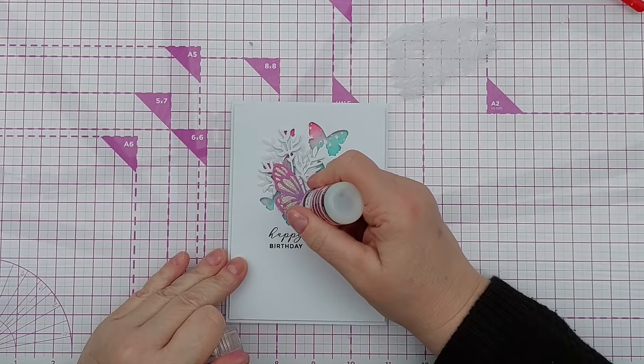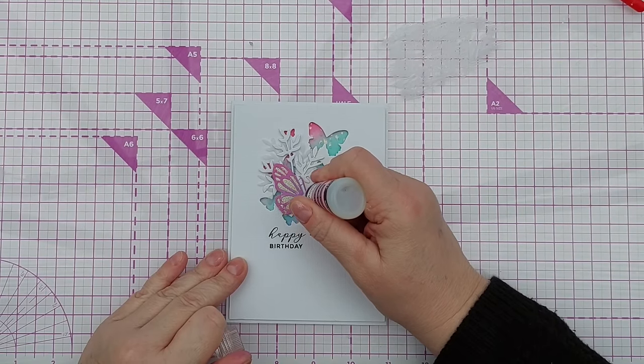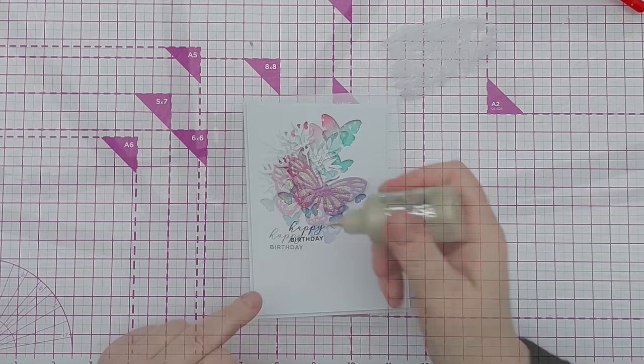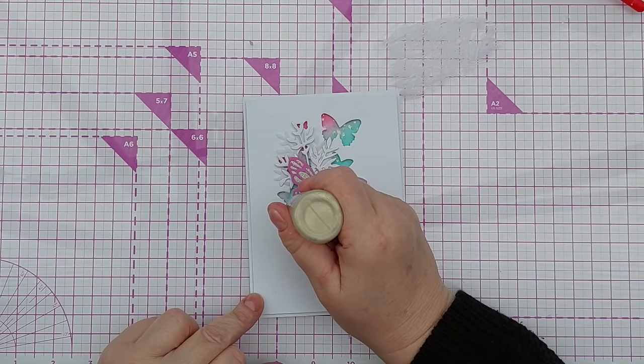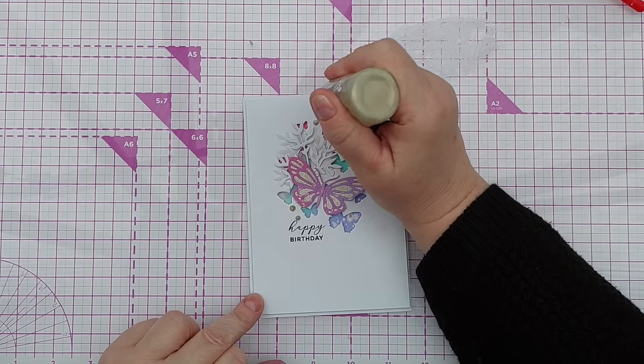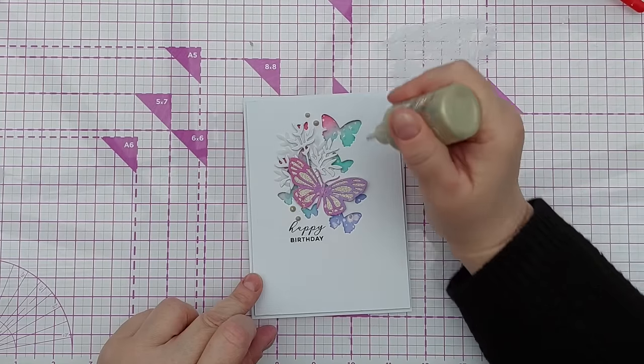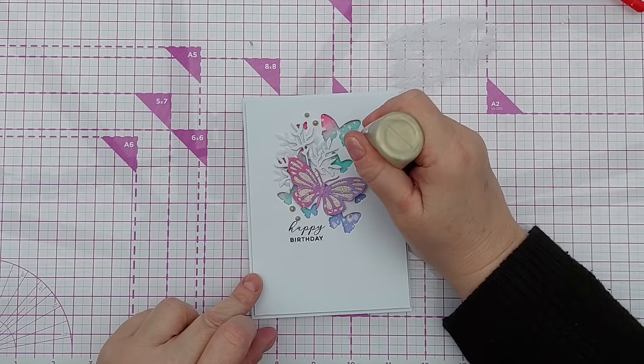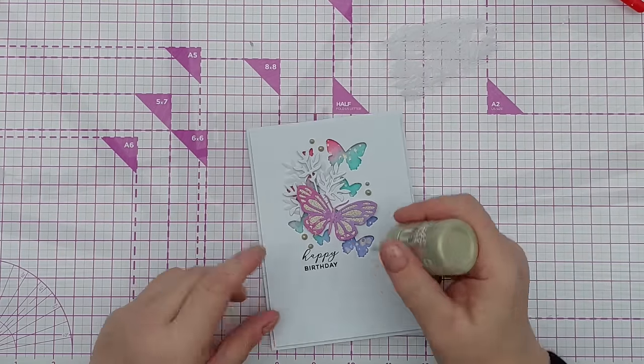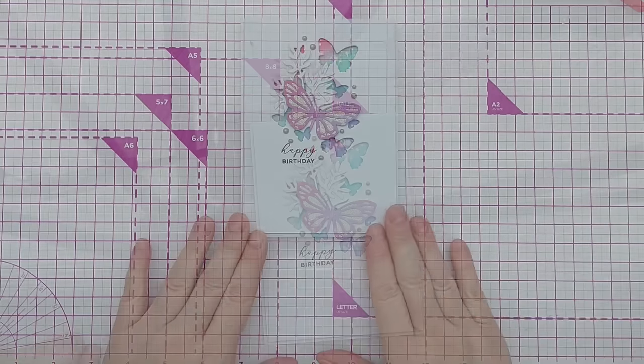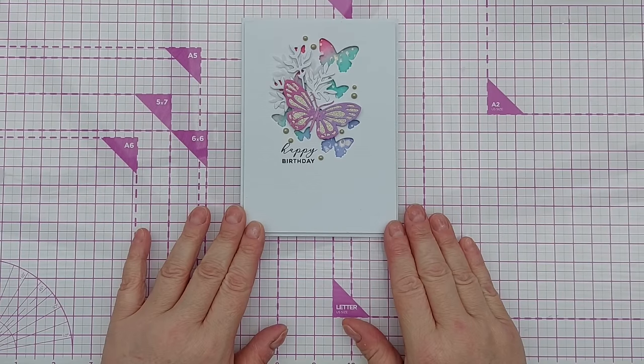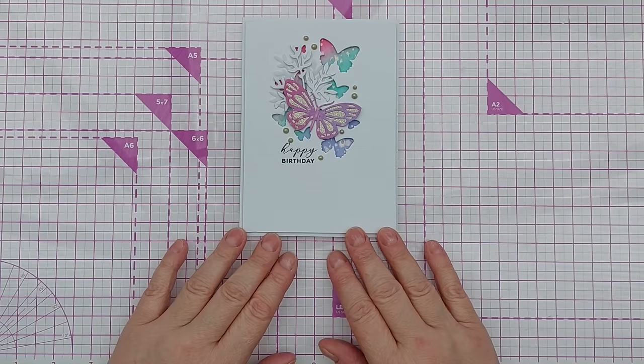To give his body a bit of dimension and shine I'm going to add some glossy accents up the middle and onto his head. And I've got some pale gold Nouveau drops which I'll add in a few places as finishing details around my aperture. So there we go, that's one aperture card created not with an aperture die but with individual butterfly dies. And I really like how this has turned out.